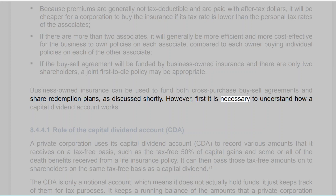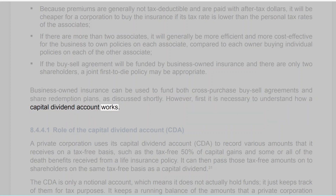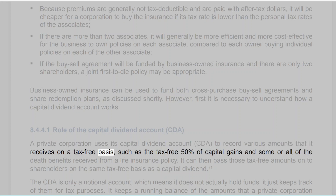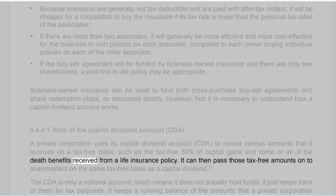However, first it is necessary to understand how a capital dividend account works. 8.4.4.1 Role of the Capital Dividend Account (CDA). A private corporation uses its capital dividend account (CDA) to record various amounts that it receives on a tax-free basis, such as the tax-free 50% of capital gains and some or all of the death benefits received from a life insurance policy.